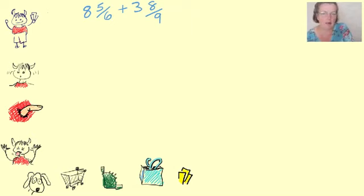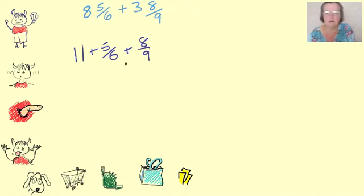So we've got eight pizzas plus three pizzas, which is eleven pizzas. And then we've also got this five-sixths, this one here, and we've got this eight-ninths. Next thing we're going to do is we're going to cut up all of these bits into the same size bits, and then it's easier to add up.